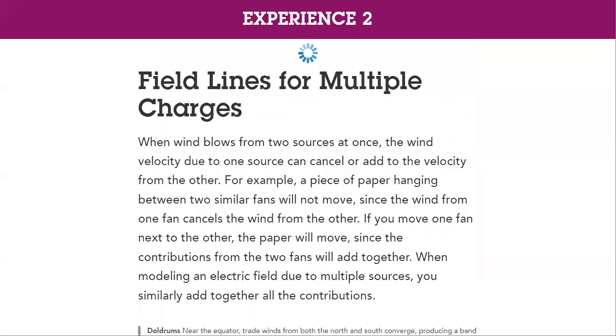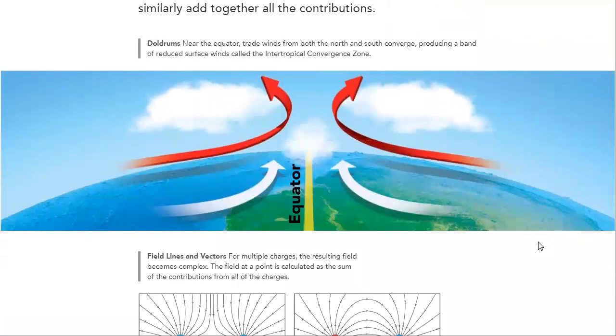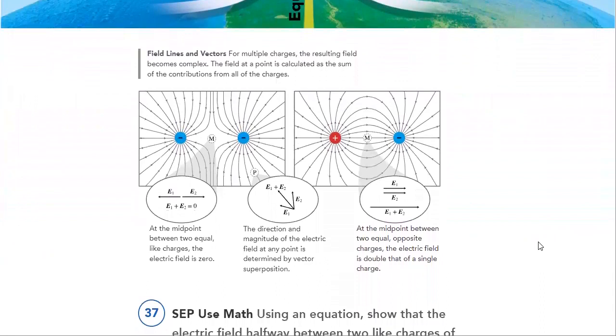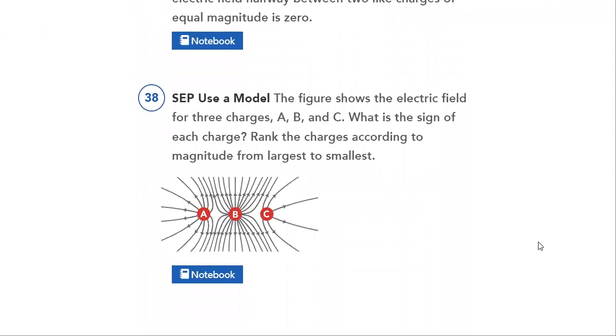Then, we will discuss field lines for multiple charges here. Field and voltage terms near the equator. Then, we will be able to develop effective charge recognition system, and then we will see here how the field lines and vectors, how to draw them, and we will discuss them in details.